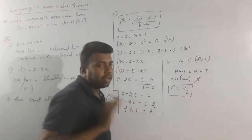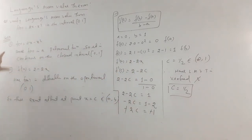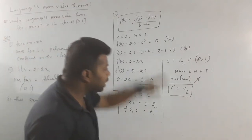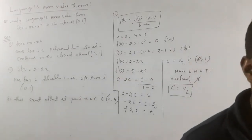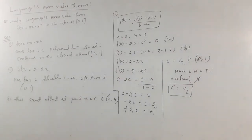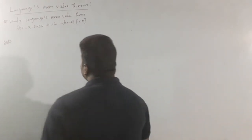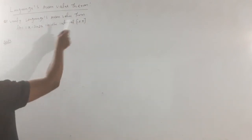Hence, LMVT is verified and c is equal to 1 by 2. Now I am going to do the next problem. I am going to ask you to verify Lagrange Mean Value Theorem for f of x is equal to x minus sin 2x.